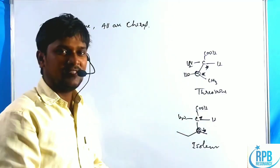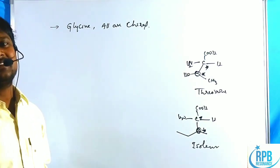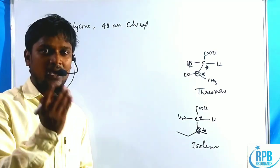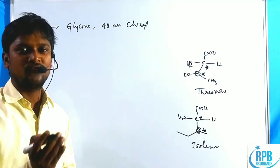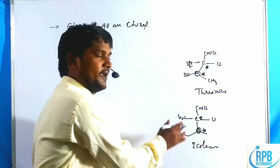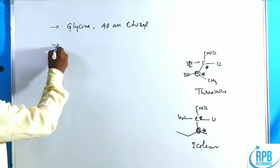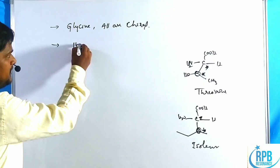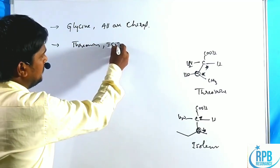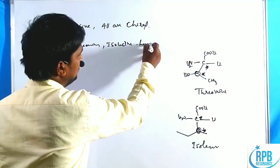If two chiral centers are present, it gives four types of isomers, and among the four isomers only one is biologically active. We will discuss only those active isomers. Threonine as well as isoleucine have two asymmetric centers, two chiral centers.